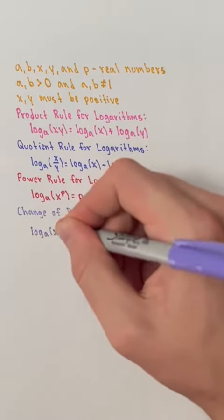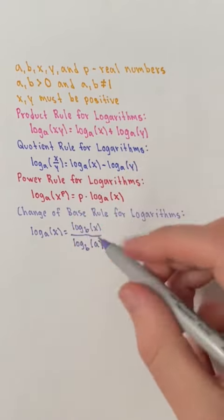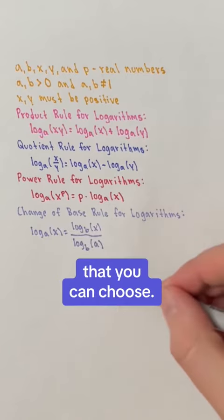The change of base rule for logarithms states that the log base a of x is equal to the log base b of x over the log base b of a, where b is a new base that you can choose.